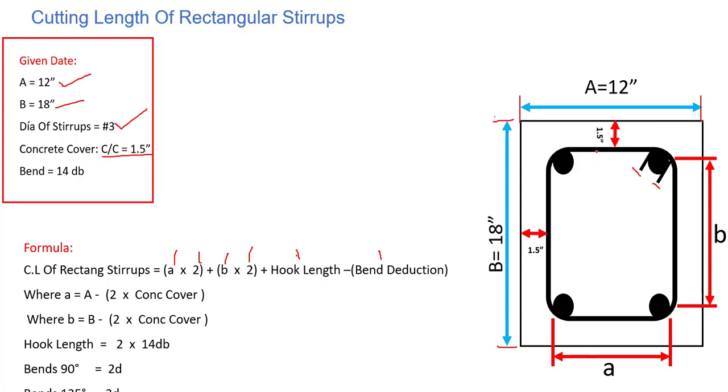What is small a? From this large A, we need to deduct concrete cover from both ends in order to find out small a. And we have small b - from this large B we need to deduct concrete cover from both ends.